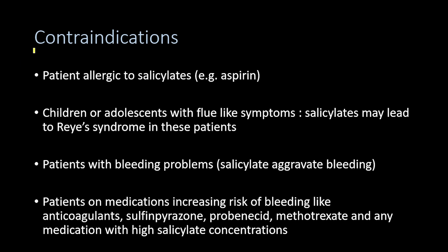Bismuth subsalicylate is contraindicated in patients allergic to salicylates, such as aspirin. It is also contraindicated in children or adolescents with flu-like symptoms, as salicylates may cause Reye's syndrome. It is contraindicated in patients with bleeding problems, and in patients on medications that increase bleeding risk — such as anticoagulants, sulfinpyrazone, probenecid, methotrexate, or any medications with high salicylate concentrations.